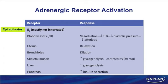Stimulating beta-2s drops blood pressure due to vasodilation, which can lead to reflex tachycardia. On the uterus, a beta-2 agonist can inhibit labor and stop contractions. On the lungs, stimulating beta-2s to bronchodilate is useful for asthma or COPD.